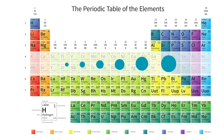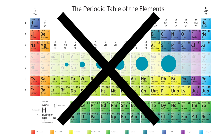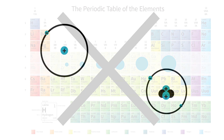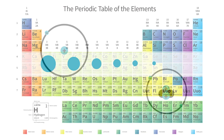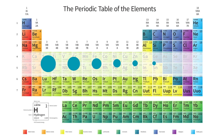As the atomic number increases across a period, you might expect the atoms to grow larger. But in fact, they usually get smaller. Here's the deal: adding more protons increases the positive charge in the nucleus. This charge pulls the electrons closer to the nucleus, causing the atom to shrink. So even though the atomic number goes up, the strong charge of the nucleus compacts the electrons down to a smaller overall size. It's like squeezing a sponge.